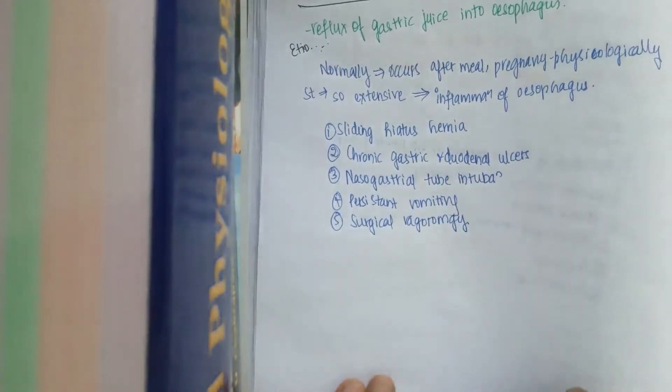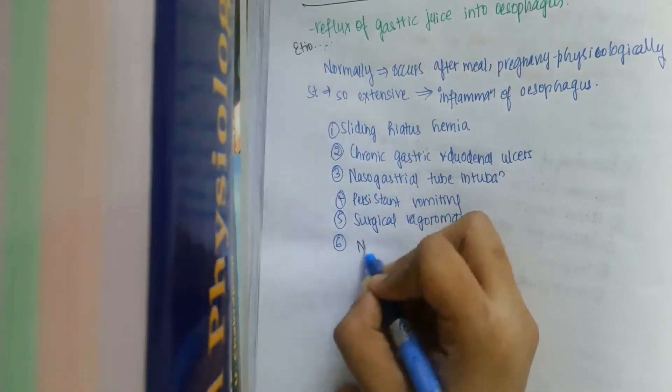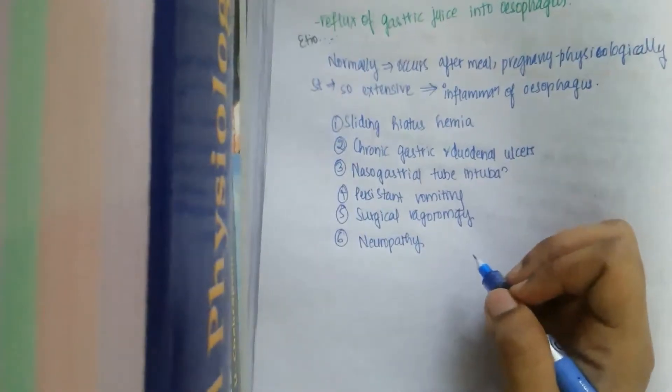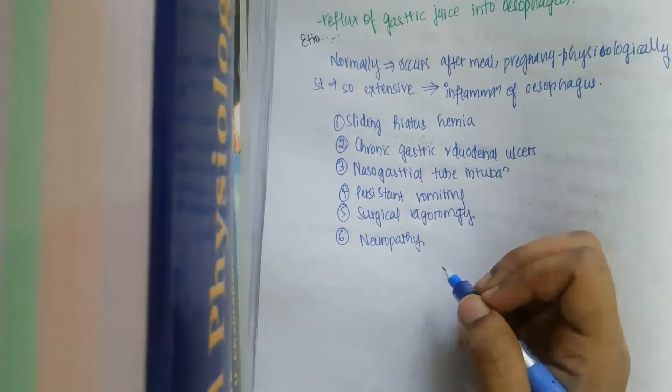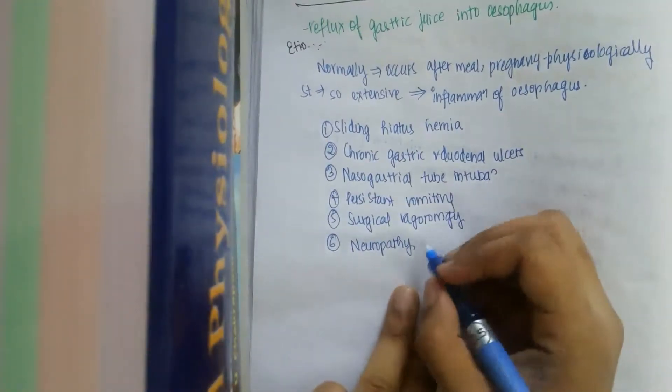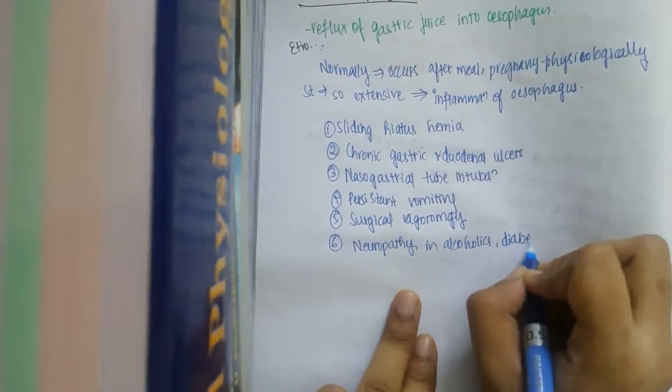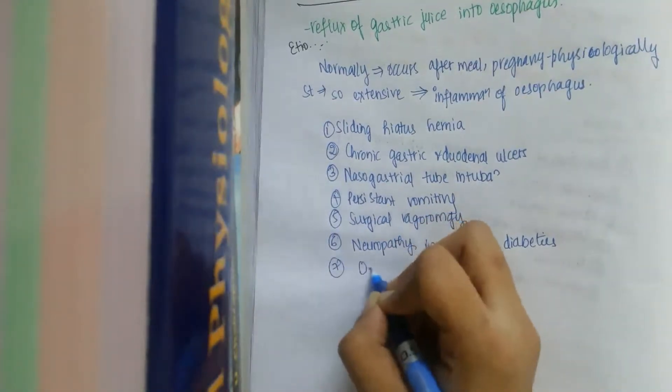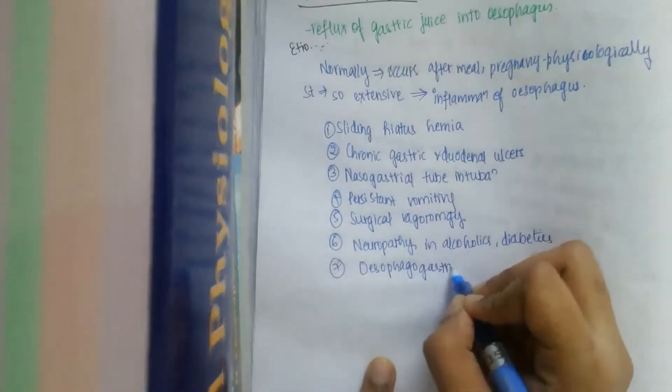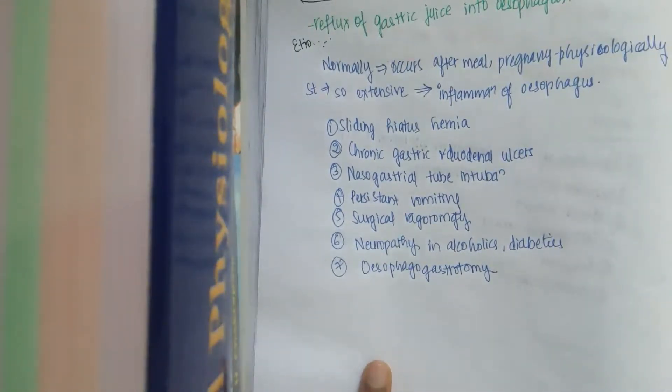Whenever we remove vagus, there is this reflux problem. The sixth one is neuropathy. In neuropathy, vagus is the nerve which mediates the peristalsis, but due to the absence of this tension there is lower peristalsis resulting in reflux esophagitis. The seventh one is esophagogastrotomy.